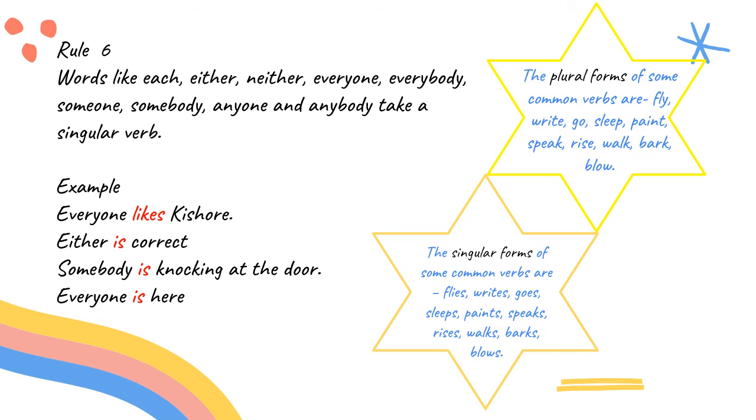Rule number 6. Words like either, neither, everyone, everybody, someone, somebody, anyone, anybody take a singular verb. For example, everyone likes Kishore. Likes is a singular verb. Either is correct. Somebody is knocking at the door. Everyone is here.